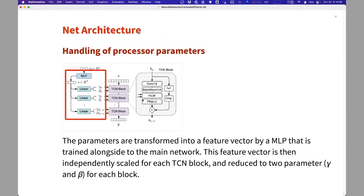How are the processor parameters handled? The parameters, in our case, it's just a vector of two numbers, these are passed to a multi-layer perceptron. This produces a feature vector, and this gets scaled for each of the TCN blocks. And this multi-layer perceptron and these linear layers are trained in conjunction with the whole network. It's not a separate process.